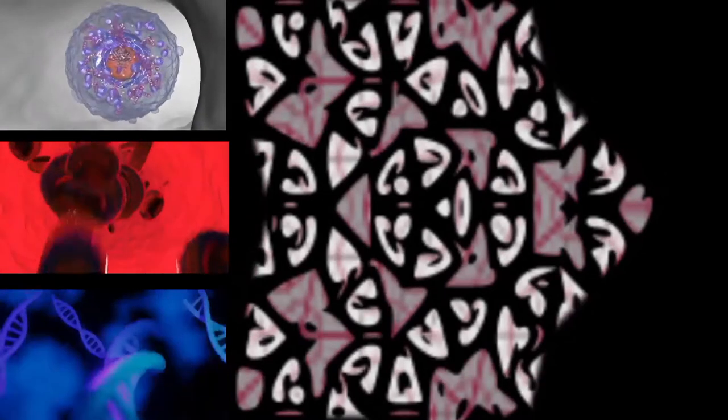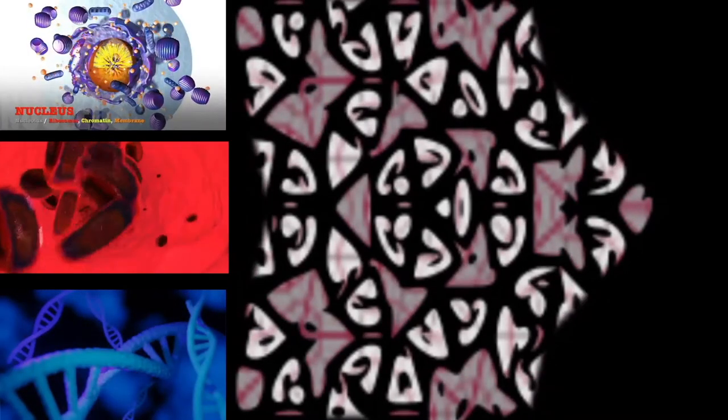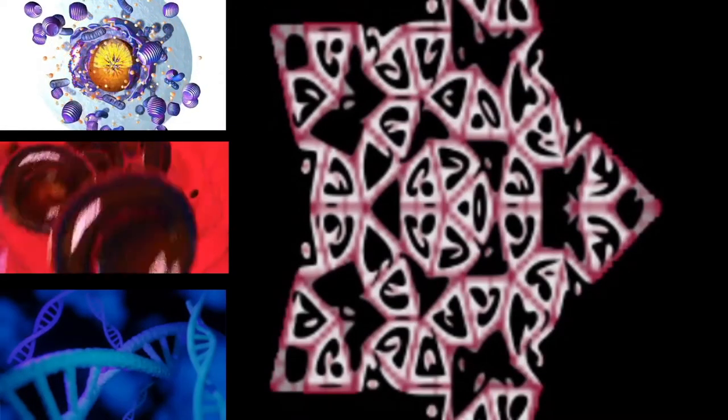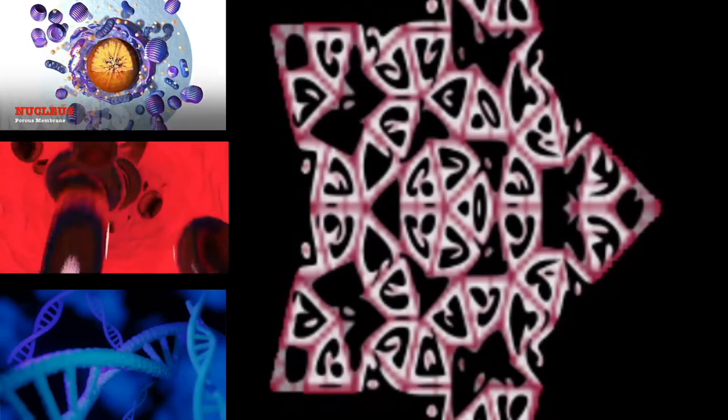The metamonad Monocercomonoides has also acquired bilateral gene transfer, a cytosolic sulfur mobilization system that provides the clusters of iron and sulfur required for protein synthesis. The normal mitochondrial iron-sulfur cluster pathway has been lost secondarily.